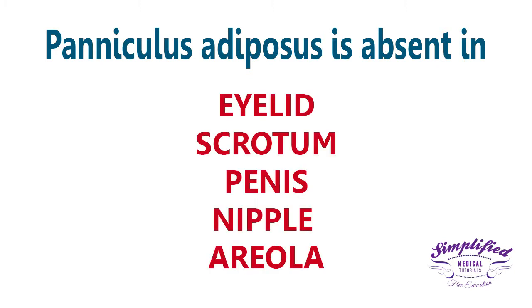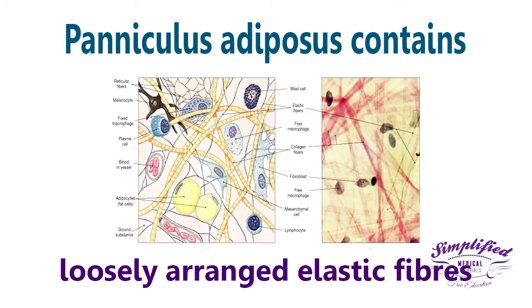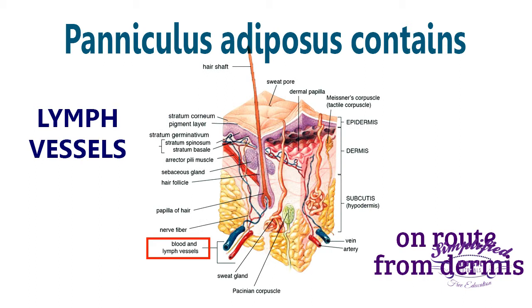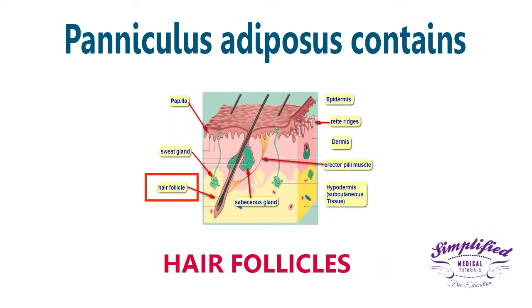Paniculus adiposis is particularly absent in the eyelid, scrotum, penis, nipple, and areola. The paniculus adiposis, or hypodermis layer, contains various structures including loosely arranged elastic fibers and fibrous bands anchoring the skin to the deep fascia.